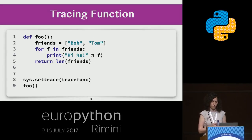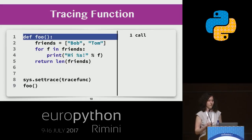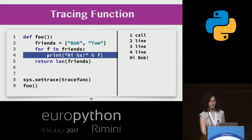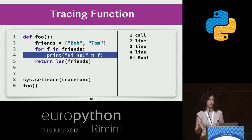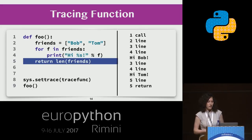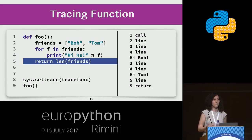Let's see how it works. For example, we have a very simple function, foo, and we define this tracing function. First, we receive an event 'call' on line 1 because we called function foo. After that, we receive an event 'line' on line 2 because line 2 is executed. Then we receive two more 'line' events on lines 3 and 4. Then execution goes to line 5 and we receive event 'return', meaning we are leaving the current frame.